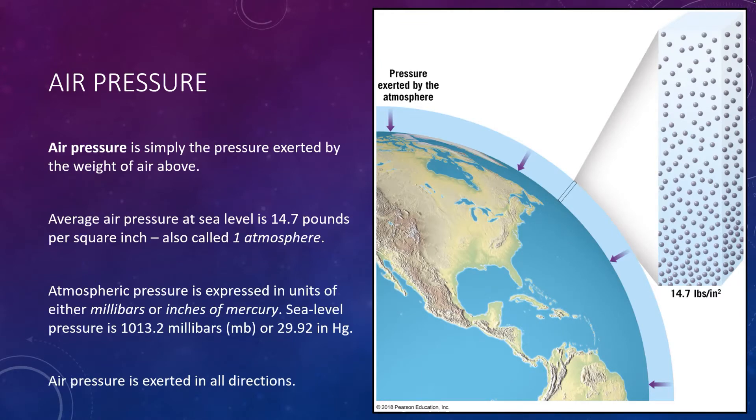Air pressure is simply the pressure exerted by the weight of air above. Average air pressure at sea level is about one kilogram per square centimeter or 14.7 pounds per square inch, which is also called one atmosphere or ATM. Specifically, a column of air one inch in cross-section measured from sea level to the top of the atmosphere would weigh about 14.7 pounds. This is roughly the same pressure that is produced by one square inch column of water that is 33 feet in height.